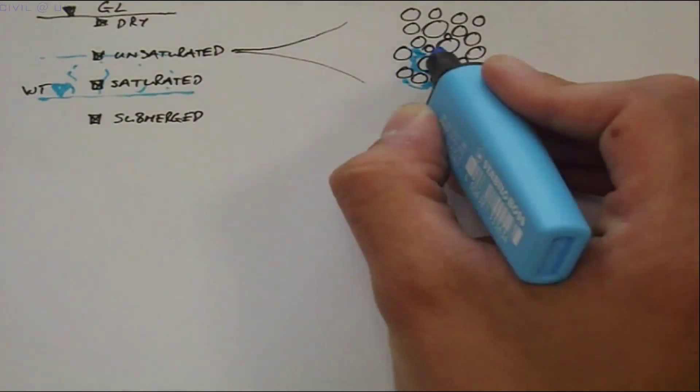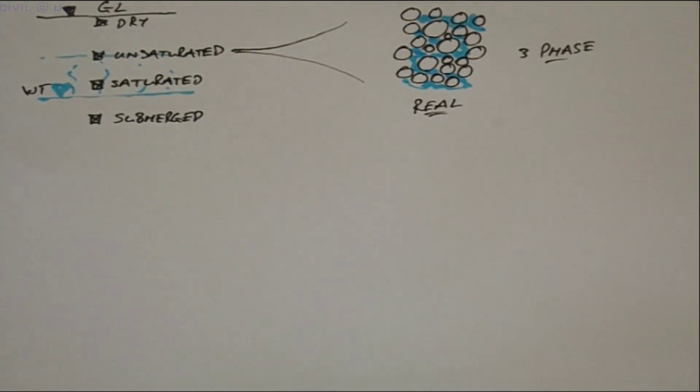Starting with the unsaturated soil, we see its three phase nature. Imagine for a moment that we were able to take all the soil particles and fuse them into a solid volume so there are no air voids.